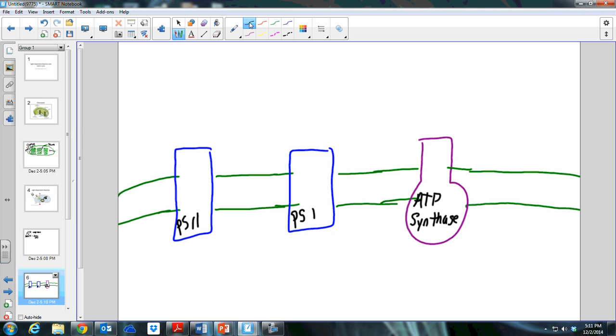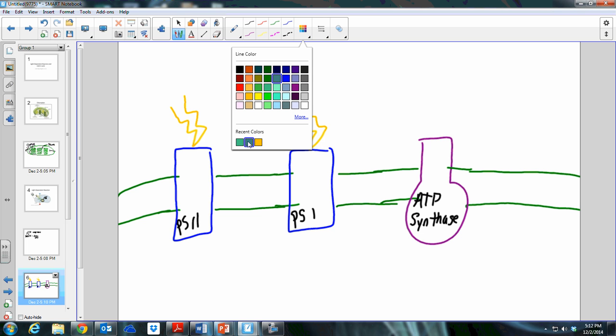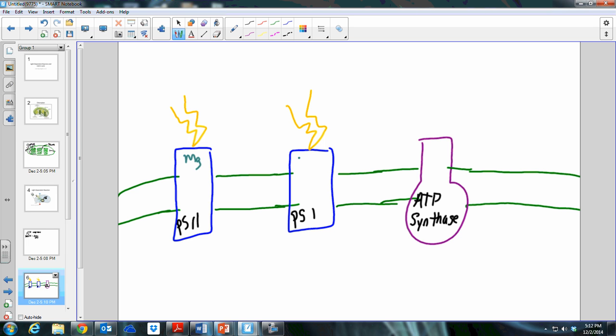Photosystem one and photosystem two have a particular job, and their job is to capture the light from the sun, which we'll use lightning to demonstrate. Light is being captured on these photosystems. Magnesium is on these photosystems as well, and magnesium is excited by the presence of light.